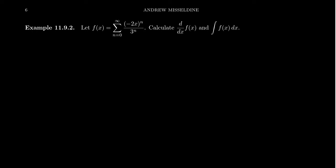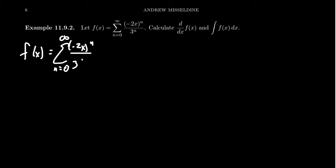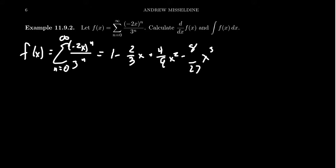Let's look at an example. We have the function f(x) defined as the power series: the sum from n equals zero to infinity of (negative 2x) to the n over 3 to the n. In expanded form this looks like 1 minus (2/3)x plus (4/9)x squared minus (8/27)x cubed plus (16/81)x to the fourth minus (32/243)x to the fifth, and this pattern continues indefinitely.